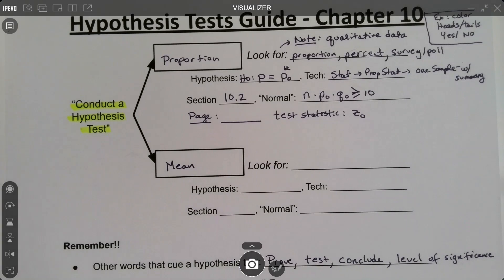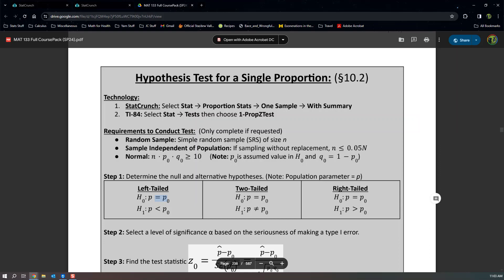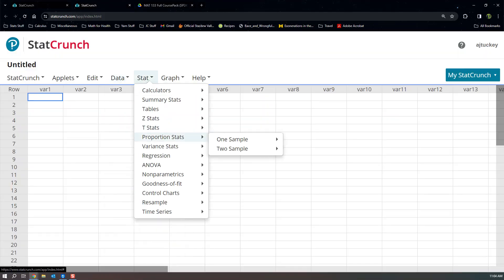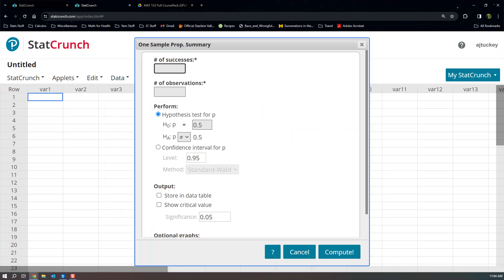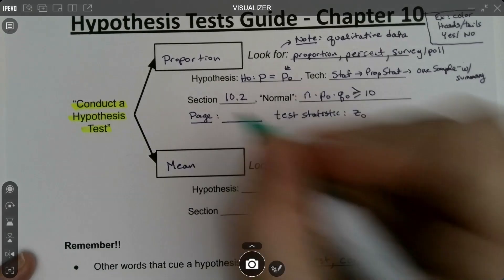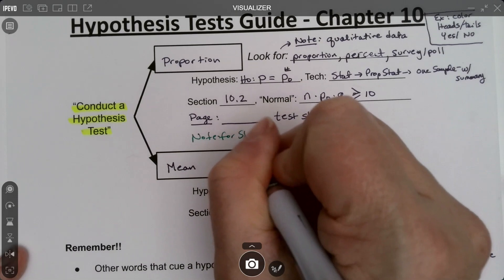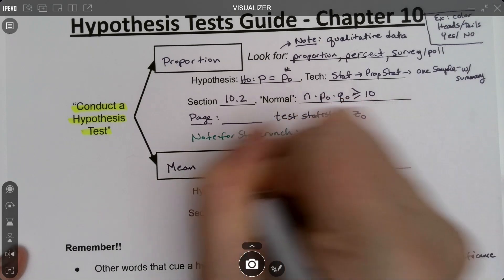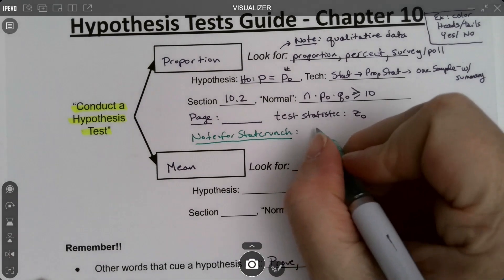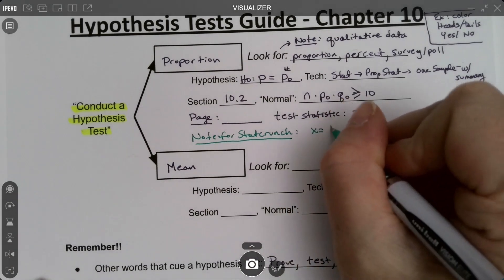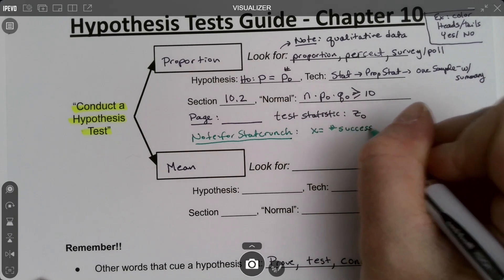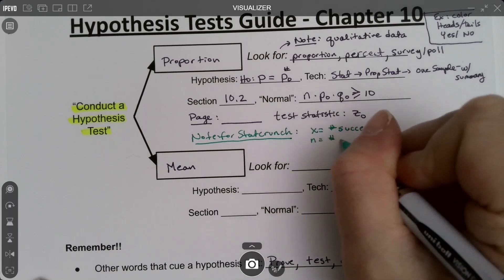Before I head to means, there is one other thing to be aware of, and it's from StatCrunch. If I look at StatCrunch and I go to Stat, Proportion Stat, One Sample with Summary, the first thing it wants is the number of successes and the next thing it wants is the number of observations. So you have to know what those two things are. We need to make a note right here for StatCrunch. x is the number of successes.